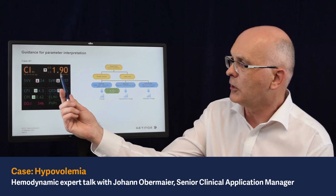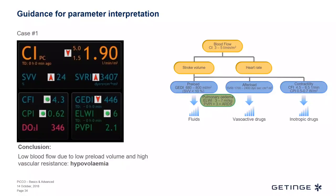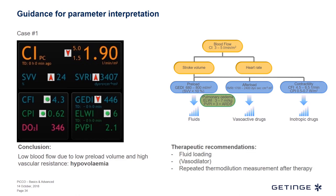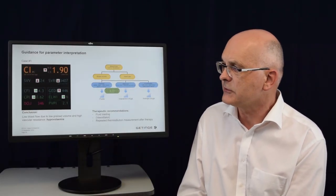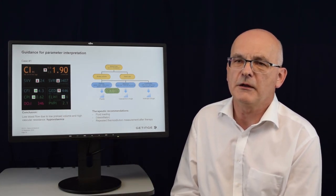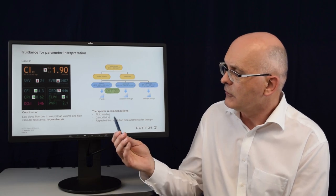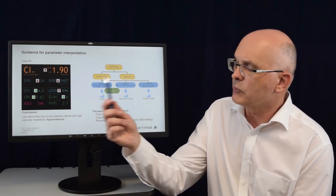From these findings — low blood flow, low volume status, and high fluid responsiveness — the conclusion is clear: this patient is in hypovolemia. Treatment is also quite clear: give fluid to the patient, and possibly apply vasodilators to decrease vascular resistance, though this will most likely normalize on its own due to fluid loading therapy and the body's reaction to the improved situation.